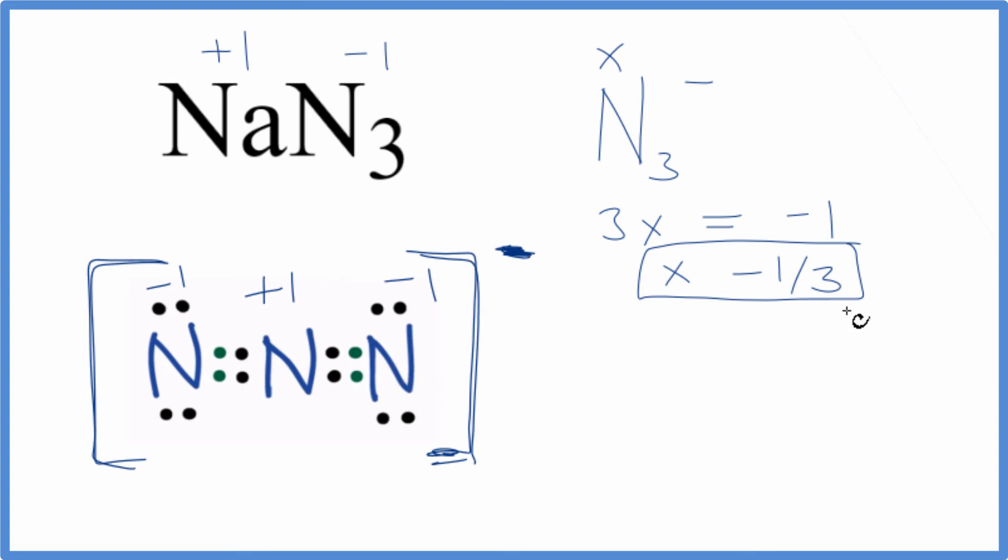So this is our average. If we average these, we get -1/3. But when we look at the actual oxidation numbers on the ion, they are different. Either way, if you're asked to do this in a general chemistry context, you're probably looking to find the average oxidation number. This is Dr. B with the oxidation numbers for NaN3. Thanks for watching.